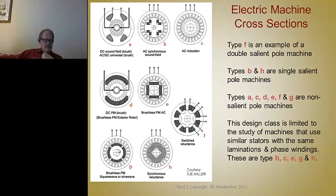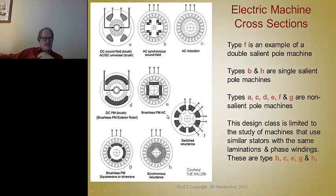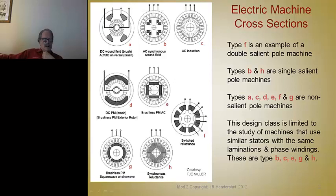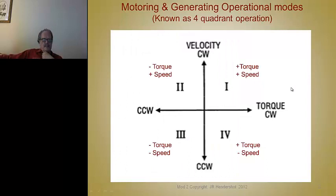Taking this motor with magnets on the surface — called an SPM, surface-mounted magnets — if you take the rotor core and put slots inside it and stick the magnets on the inside, that's now known as a brushless permanent magnet AC machine, or permanent magnet synchronous machine. You get torque from the magnets, but there are also soft iron poles between the magnet poles, and you can adjust those to vary the reluctance torque component.